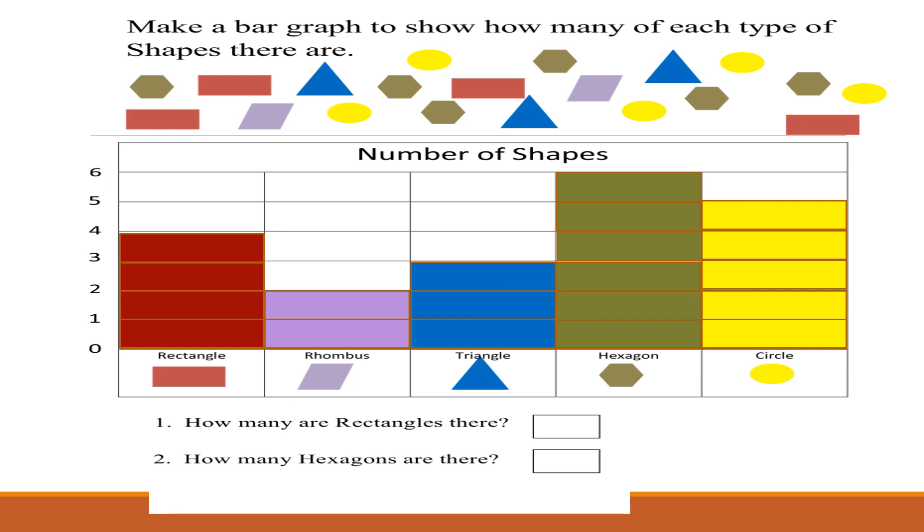So now the question is how many rectangles are there? 4. Very nice. Because we have colored 4 boxes. And what about hexagon? How many boxes have you done? 6. Very nice.